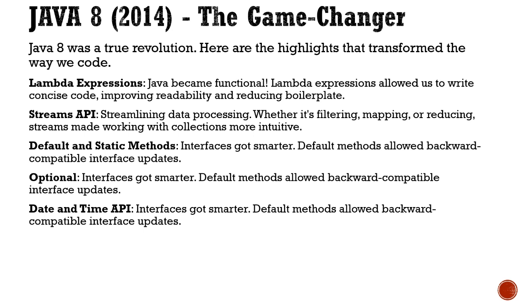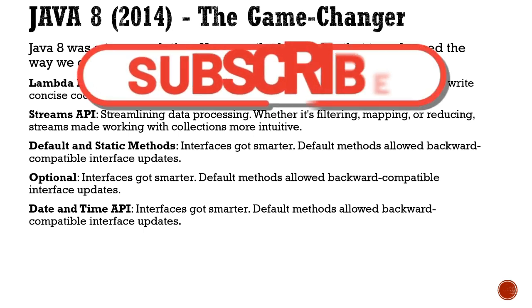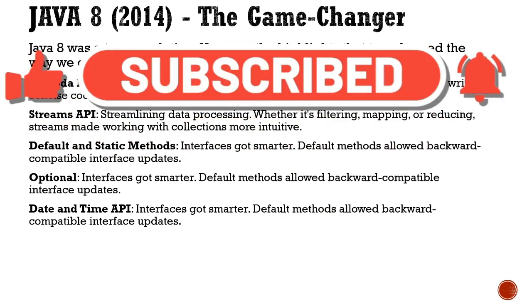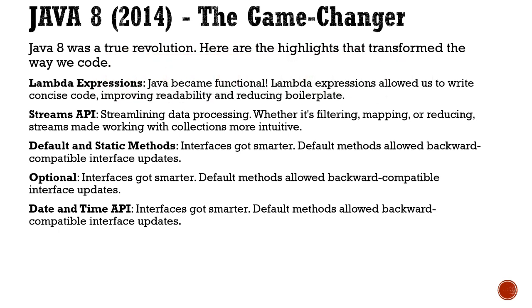One feature is lambda expressions. Prior to Java 8, there was no functional programming being used in Java — there was no functional way of writing code. With the introduction of lambda expressions, you are allowed to write quite concise, readable code which also reduces boilerplate code. You will be able to write implicit, clean code.